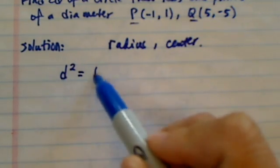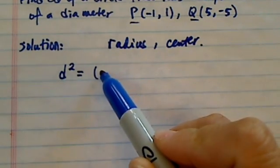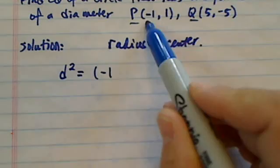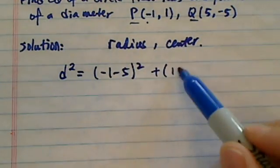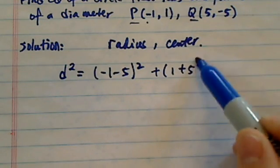Distance squared equals x minus x1, which is minus 1 minus 5, squared. This is the change in x, plus change in y, 1 minus minus 5 squared.